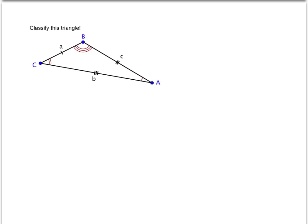What about this triangle? Can you classify it fully—both by its sides and by its angles? According to these congruence marks, none of the sides are congruent, so this is a scalene triangle.